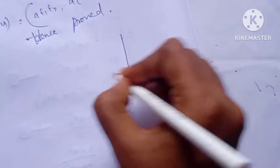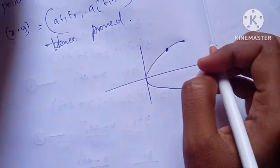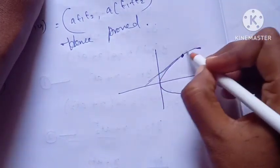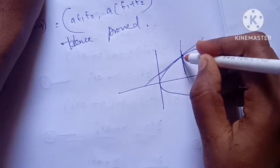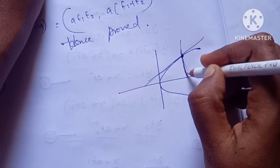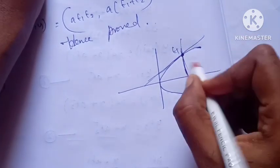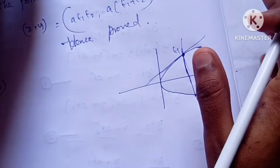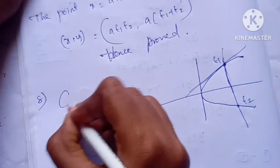So we have a parabola. At T1, the normal meets the parabola again at the point T2. The normal line again meets the parabola and touches it at T2. The equation to prove is T2 equals minus T1 plus 2 by T1.